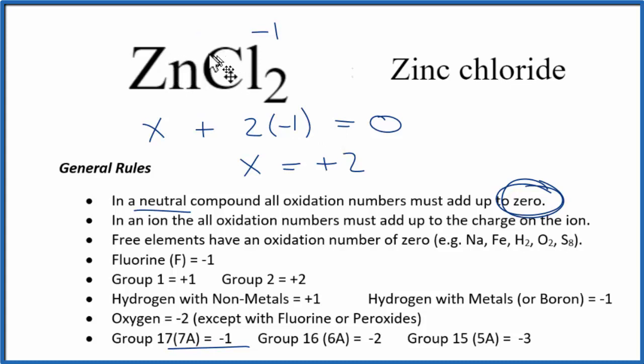It's plus two. This is Dr. B with the oxidation number for each element here in ZnCl2, zinc chloride. Thanks for watching.